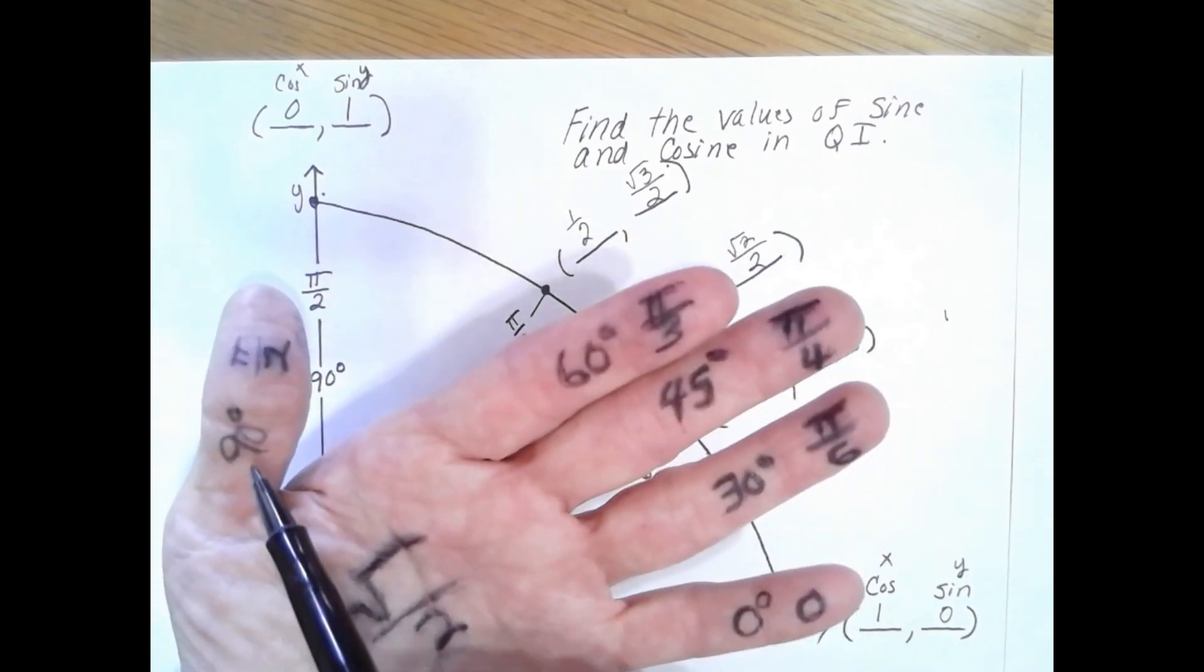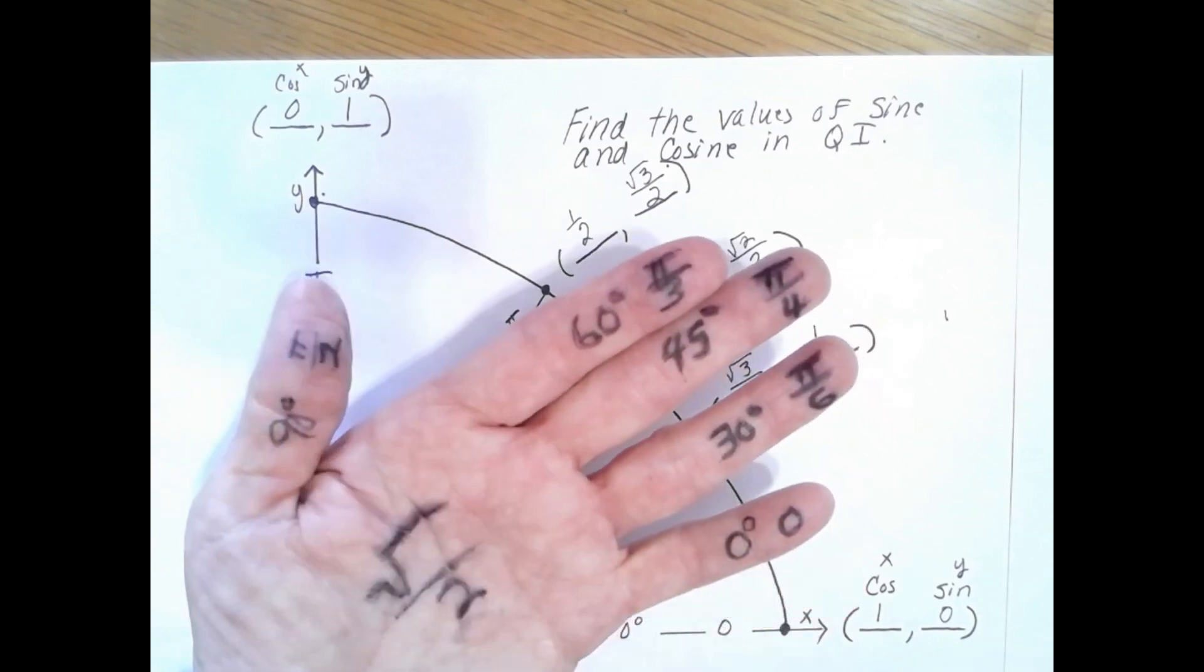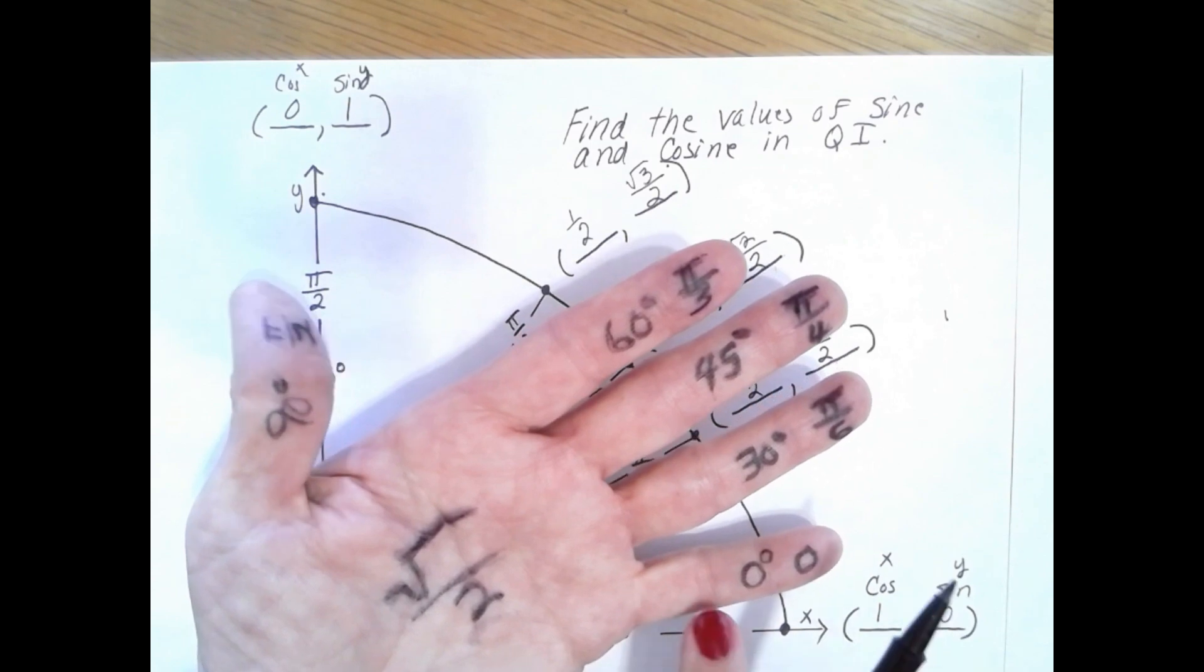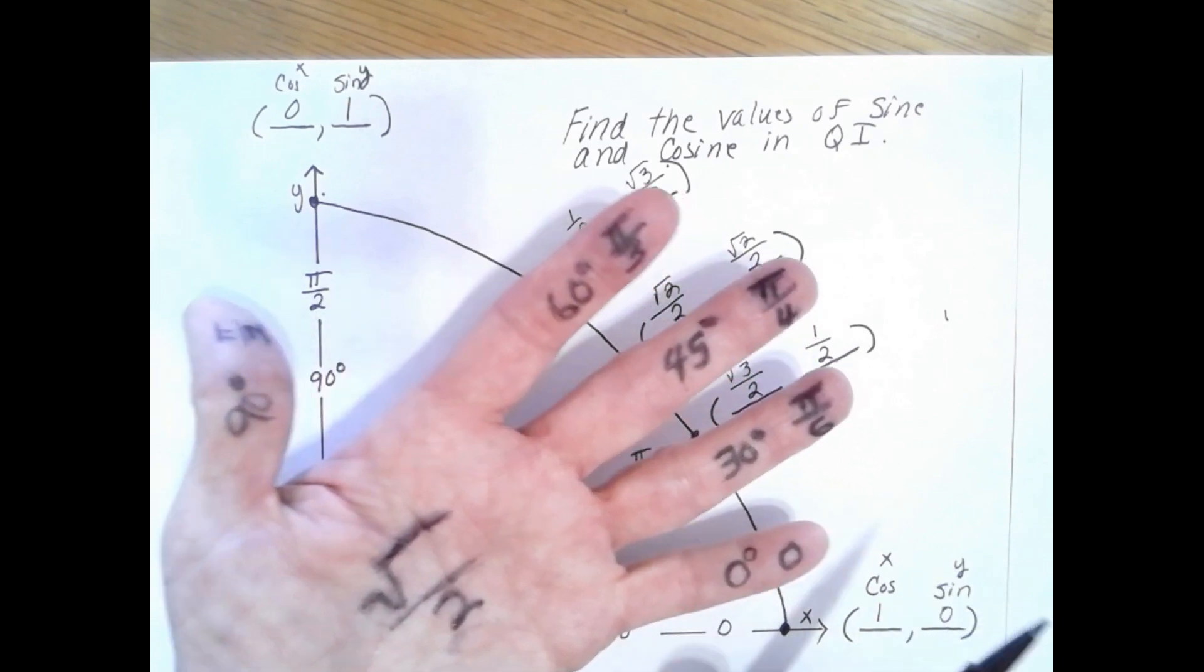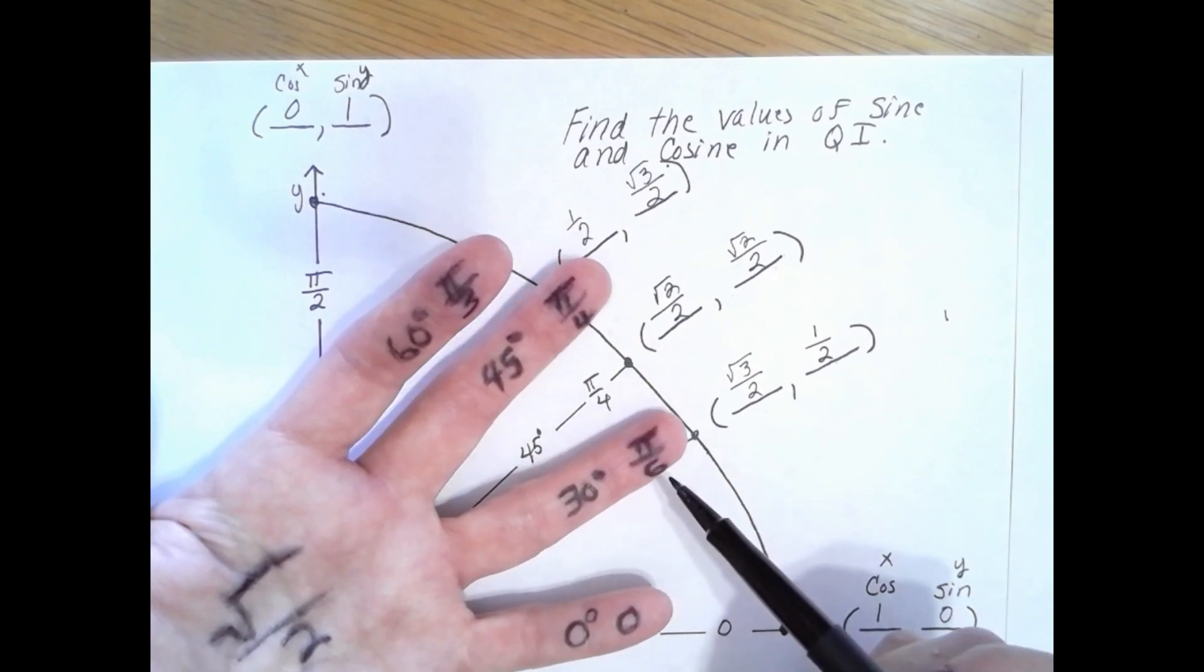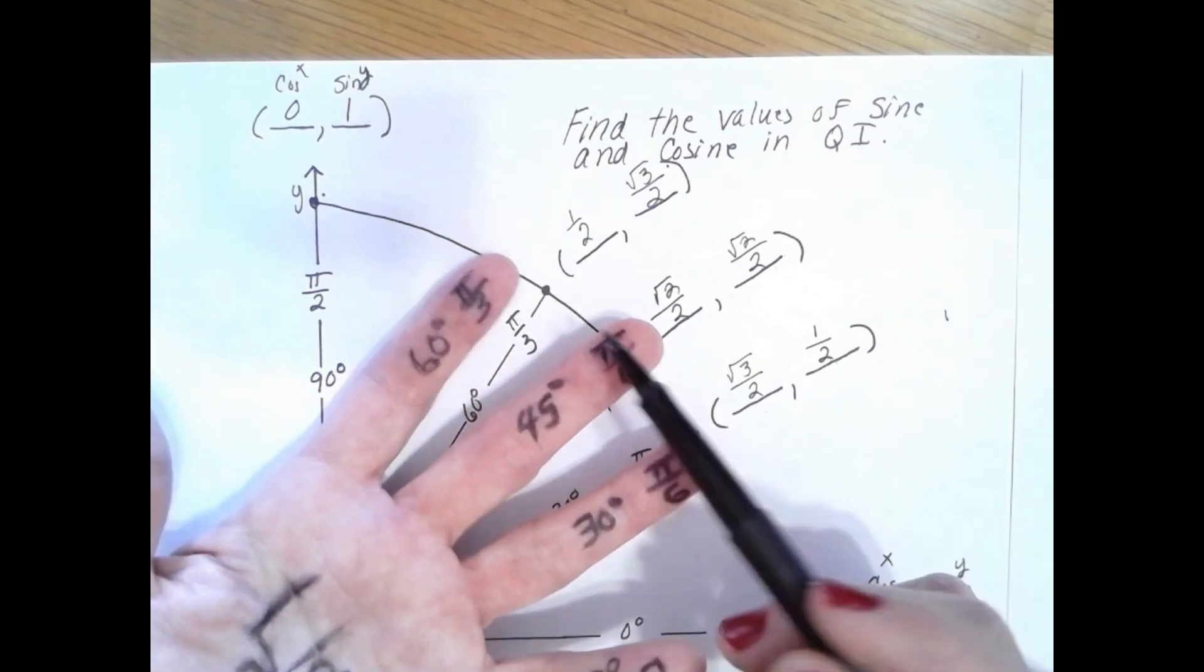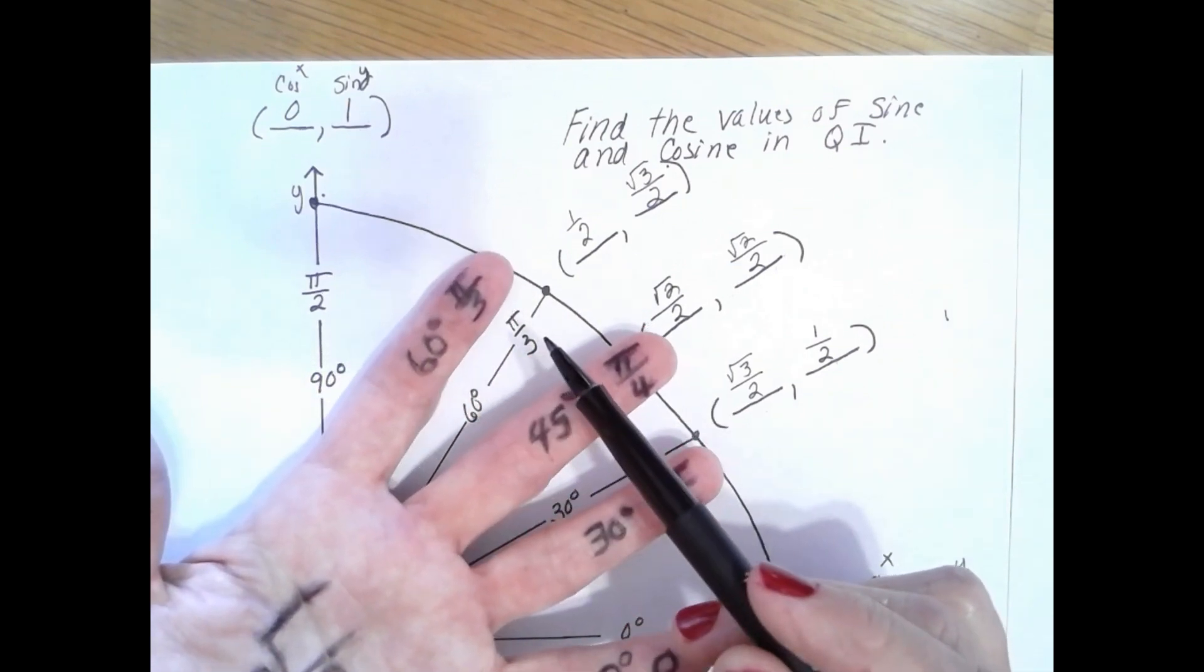On my thumb I have 90 degrees or π over 2 which corresponds to the y-axis. Those are my quadrantal angles. Then you can see on my other fingers I have 30 degrees π over 6 radians, 45 degrees π over 4 radians, and 60 degrees π over 3 radians.